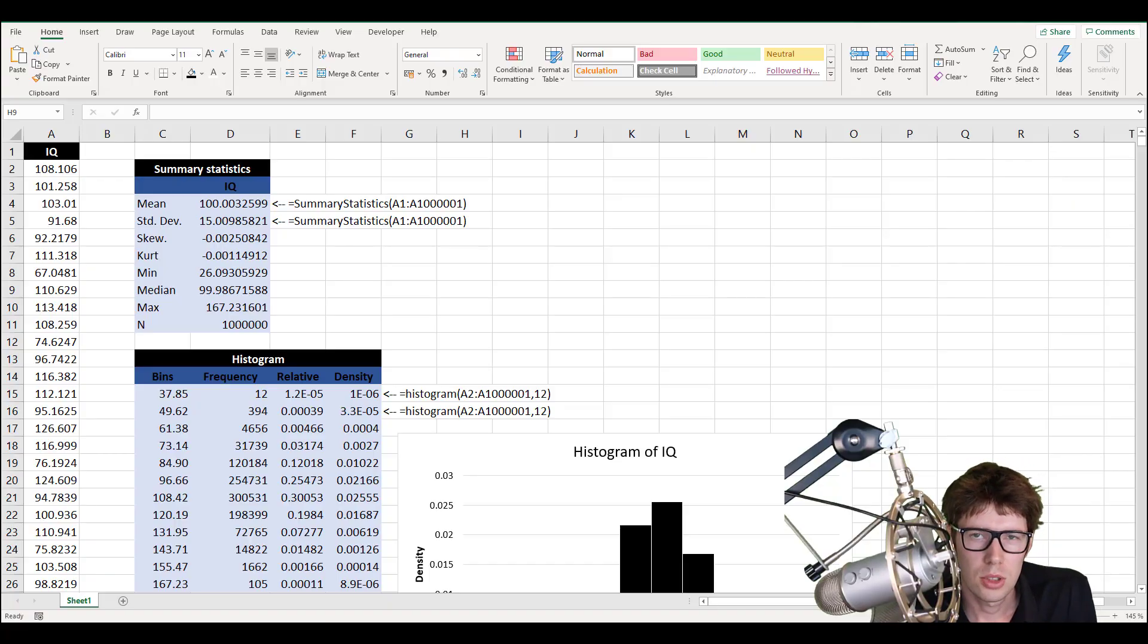That's enough theory. So here we are in the spreadsheet. I've already taken the liberty of writing the code and running the code, just to save some time here. So in column A, we have outputted from our subroutine, our visual basic application script, different pseudo random draws from the normal distribution, with the appropriate mean and standard deviation.